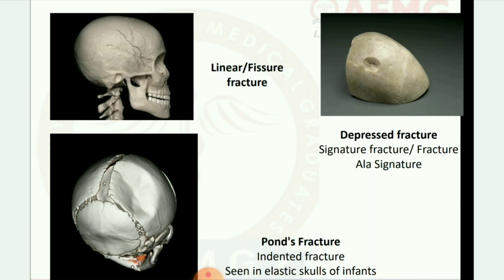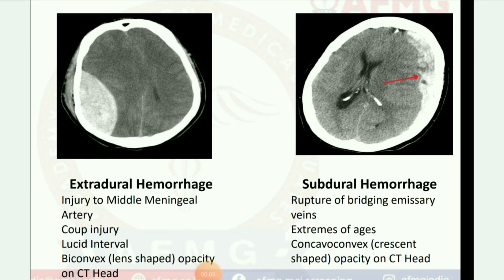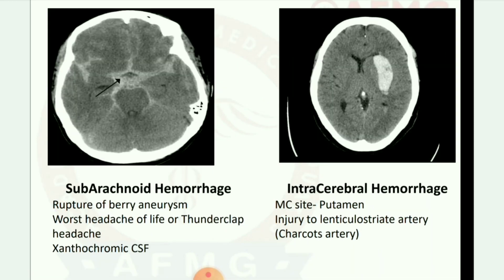Third skull fracture: pond's fracture — an indented fracture seen in elastic skulls of infants. Next image: intracranial hemorrhages. Extradural hemorrhage: injury to middle meningeal artery, coup injury, lucid interval, biconvex lens-shaped opacity on CT head. Subdural hemorrhage: rupture of bridging emissary veins, seen at extremes of ages, concave/convex crescent-shaped opacity on CT head. Subarachnoid hemorrhage: rupture of berry aneurysm, symptoms include worst headache of life (thunderclap headache), xanthochromic CSF. Intracerebral hemorrhage: most common site is putamen, injury to lenticulostriate artery (Charcot's artery).